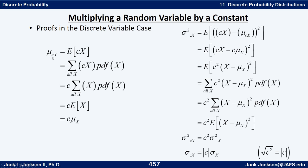The mean of c times x is the expected value of c times x, which equals the sum of c times x times the PDF of x. Since c is a constant it factors out, leaving c times the expected value of x, which is the mean of x. So the mean of cx equals c times the mean of x — just what you'd expect.